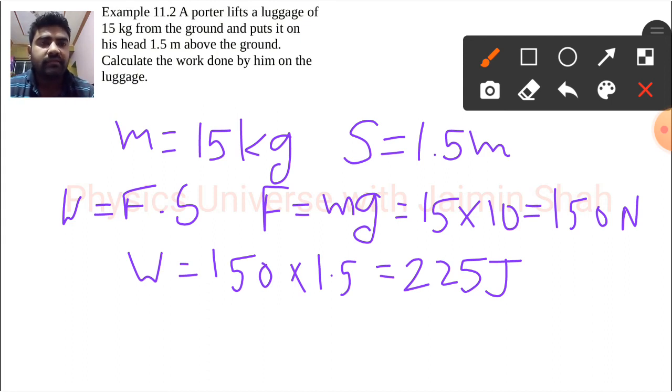The force direction and motion direction are both in the same direction, which is the upward direction. The porter lifts the luggage by exerting force upward, and motion is also in that direction for 1.5 meter. So 225 joule is the work done in this situation.